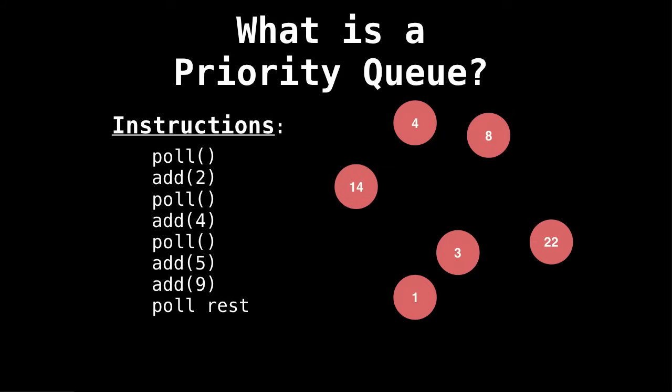Suppose we have now a list of instructions. So what the poll operation means is remove the element that has the highest priority in our priority queue. So let's see how this works. So if I say poll, then I remove the element with the highest priority, which happened to be one. Now I say add two, so we add two to our priority queue, and poll. So next we poll the smallest elements in our priority queue. And that happened to be the two we just added.